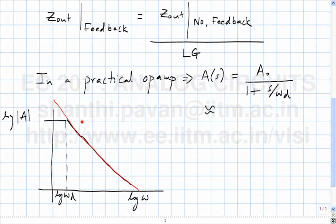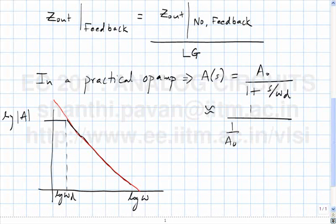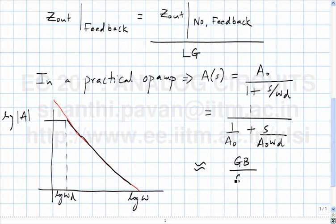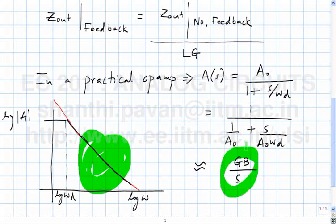For frequencies greater than ω_D, you can approximate the gain as 1 over (1/A0 + S/(A0·ω_D)). And A0·ω_D is nothing but the gain-bandwidth product (GB) of the op-amp. So you can approximate the open loop gain at any frequency beyond the dominant pole ω_D simply as GB divided by S. When you put this op-amp in a closed loop, the loop gain as a function of frequency is GB/S times F, where F is the feedback factor — please do not confuse F with frequency.